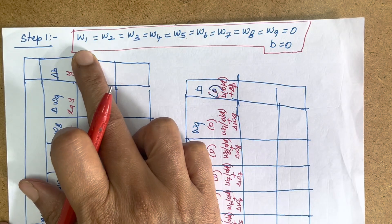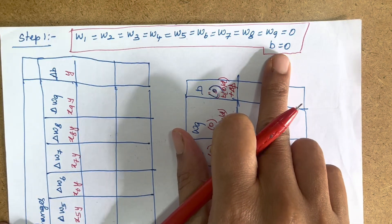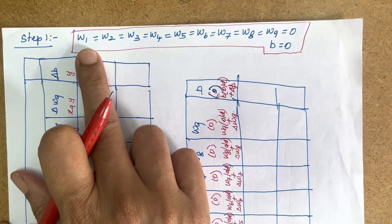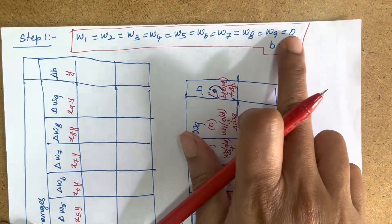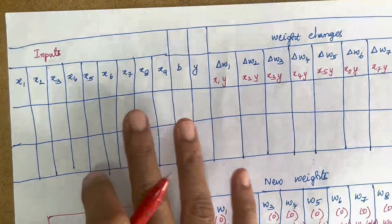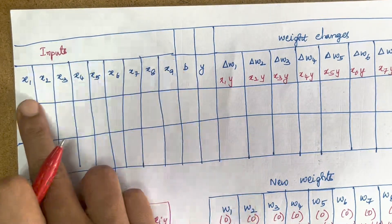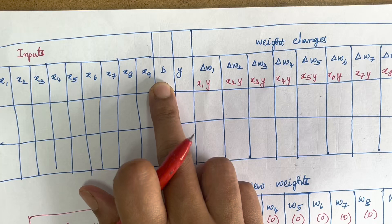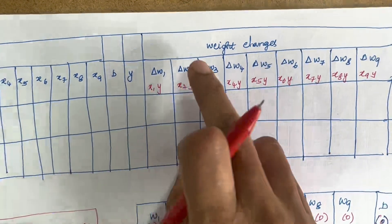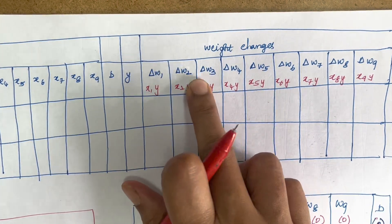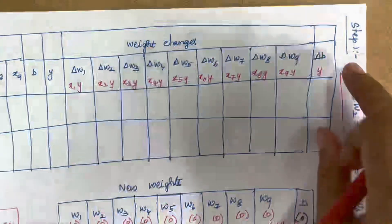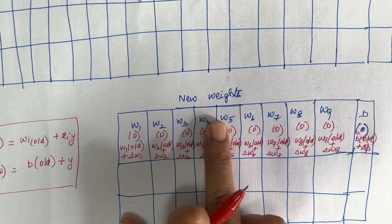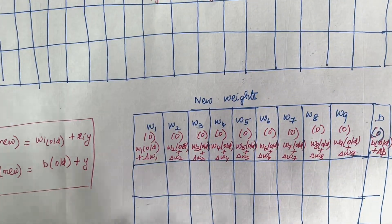The first step in the HEP network is to initialize all weights and bias to 0. Since there are 9 inputs, there will be 9 weights associated with all the links. I am going to set up a tabular column with inputs X1 to X9, one bias, the target value Y, weight changes ΔW1 to ΔW9 and Δb, and the new weights W1 to W9 along with the new bias b.